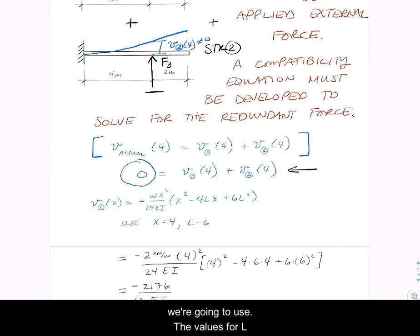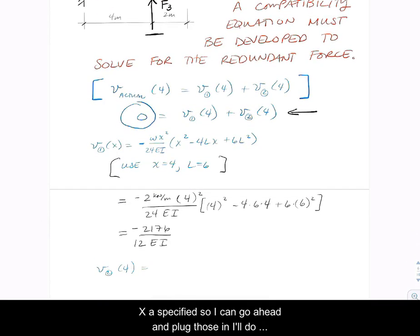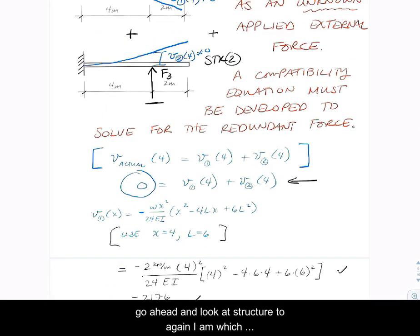We're going to use the values for L and x as specified, so I'm going to go ahead and plug those in. I'll do the math for you. And again we know that that deflection is going to be down, which is defined as negative with our sign convention.